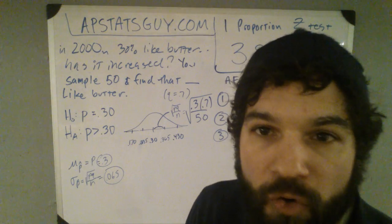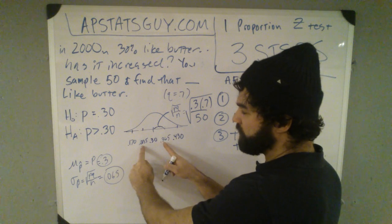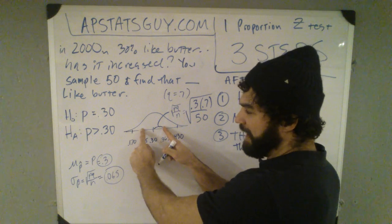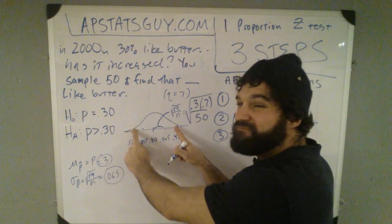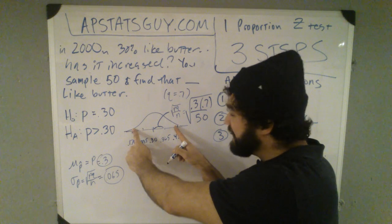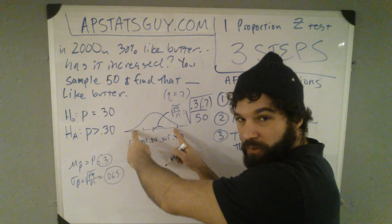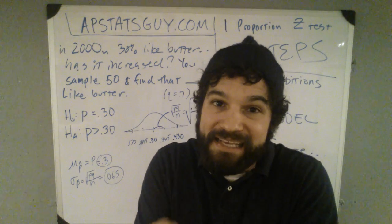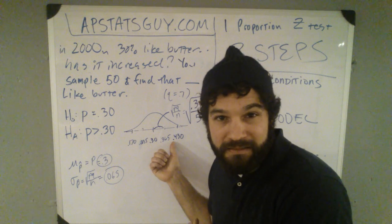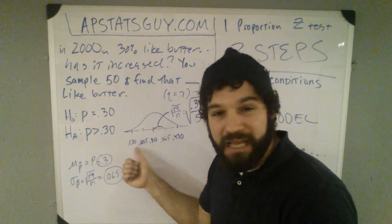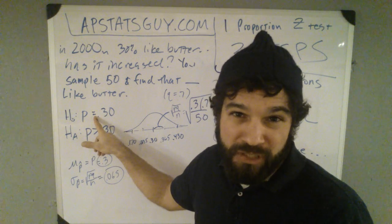So what do I know right now? I know that 68% of my samples should be between 23 and 36%. I know that 95% of my p-hat should be between, it will be very unlikely for me to get a p-hat lower than .17 or above .43, meaning it will be unlikely for me to take a sample of size 50 and have over 43% like butter or under 17% like butter if the true population, if still 30% like butter.